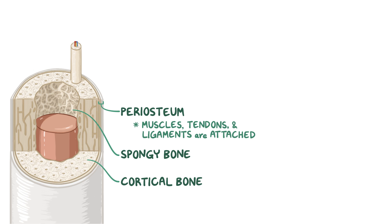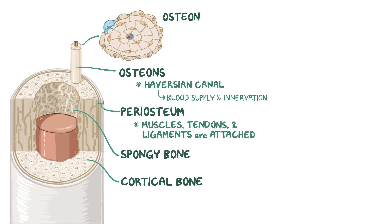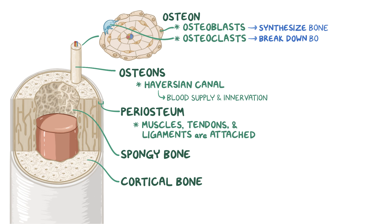If we zoom into a cross-section of cortical bone, we can see that it has many pipe-like structures called osteons running through the length of the bone. Each pipe has an empty center called a Haversian canal, which contains the nerves and blood vessels that supply the osteon. At the outer border of the osteon is a ring of cells called osteoblasts, which synthesize bone. Along with these cells are osteoclasts that break down bone.